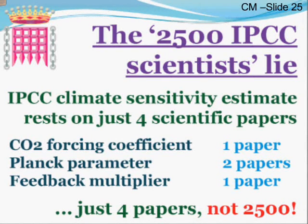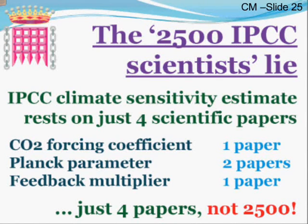On his slide 25, Chris Monckton talks about the 2,500 IPCC scientists lie. He also talks about four scientific papers related to IPCC climate sensitivity. There's a bit of confusion — is he talking about scientists or papers? I'll frame my response dealing with both. He references the CO2 forcing coefficient, Planck parameter, and feedback multiplier. So let's investigate.